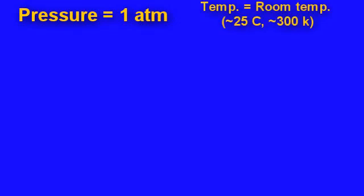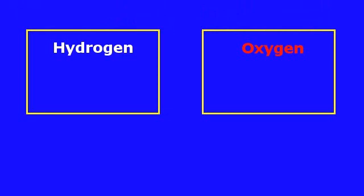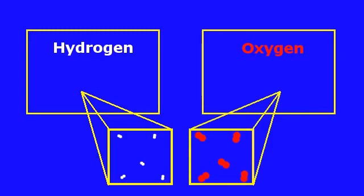Now, the interesting thing about gases is that at constant pressure, say one atmosphere, and at constant temperature, say room temperature, is that a constant number of molecules occupies the same volume. That is, a billion molecules of hydrogen will occupy about the same volume as a billion molecules of oxygen.